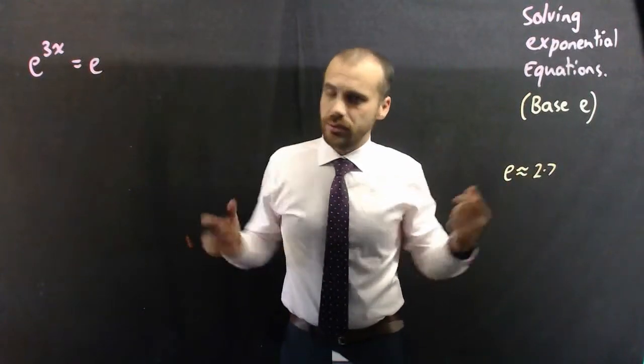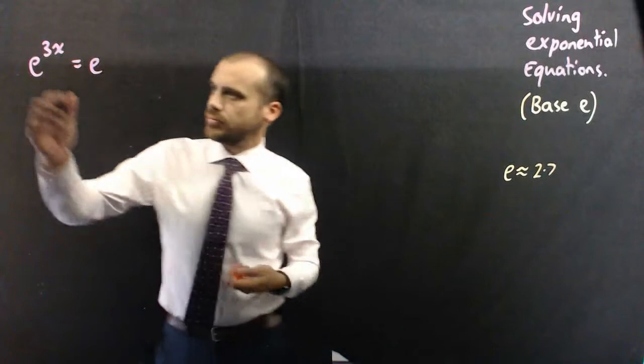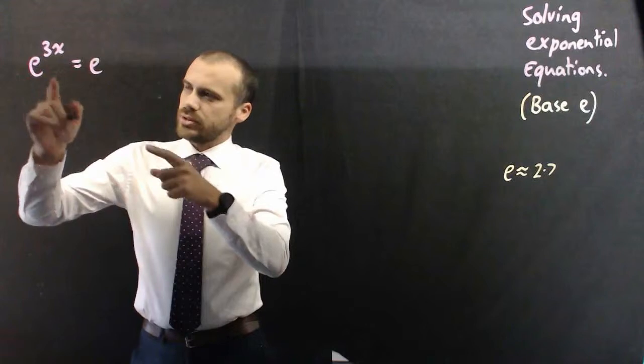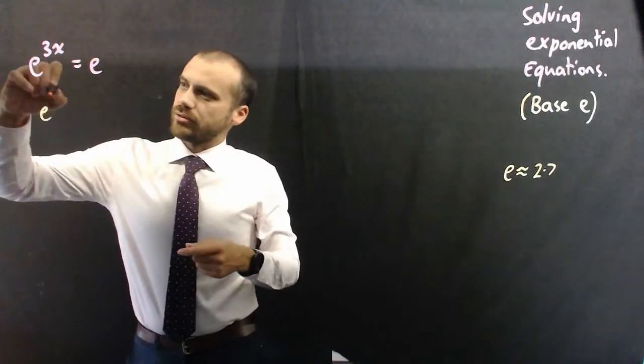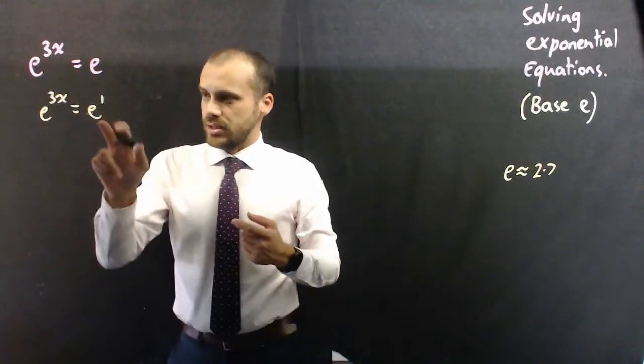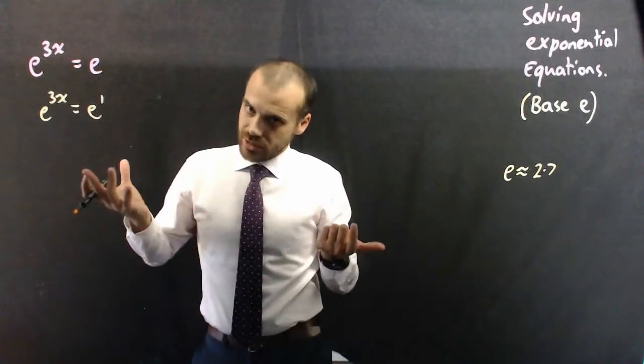Okay, now that I've written that one, we may as well solve it. If e to the power of 3x equals e, we could say that e to the 3x equals e to the 1. Because e is just e to the 1. So I haven't changed anything there.